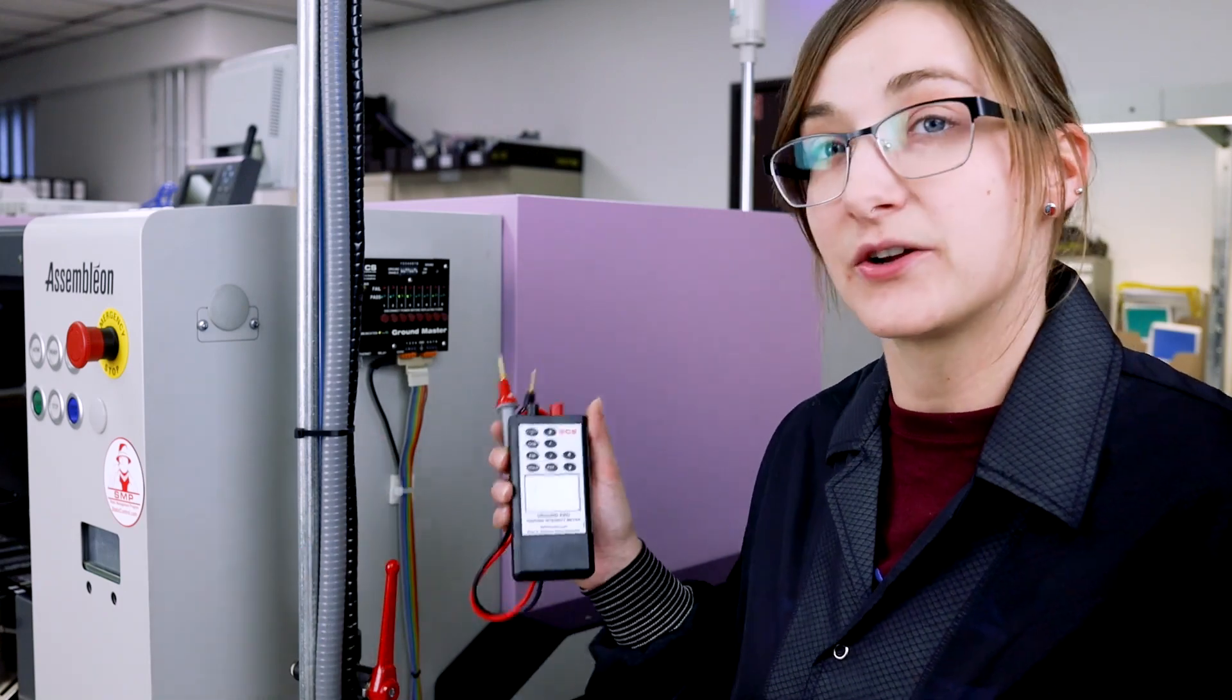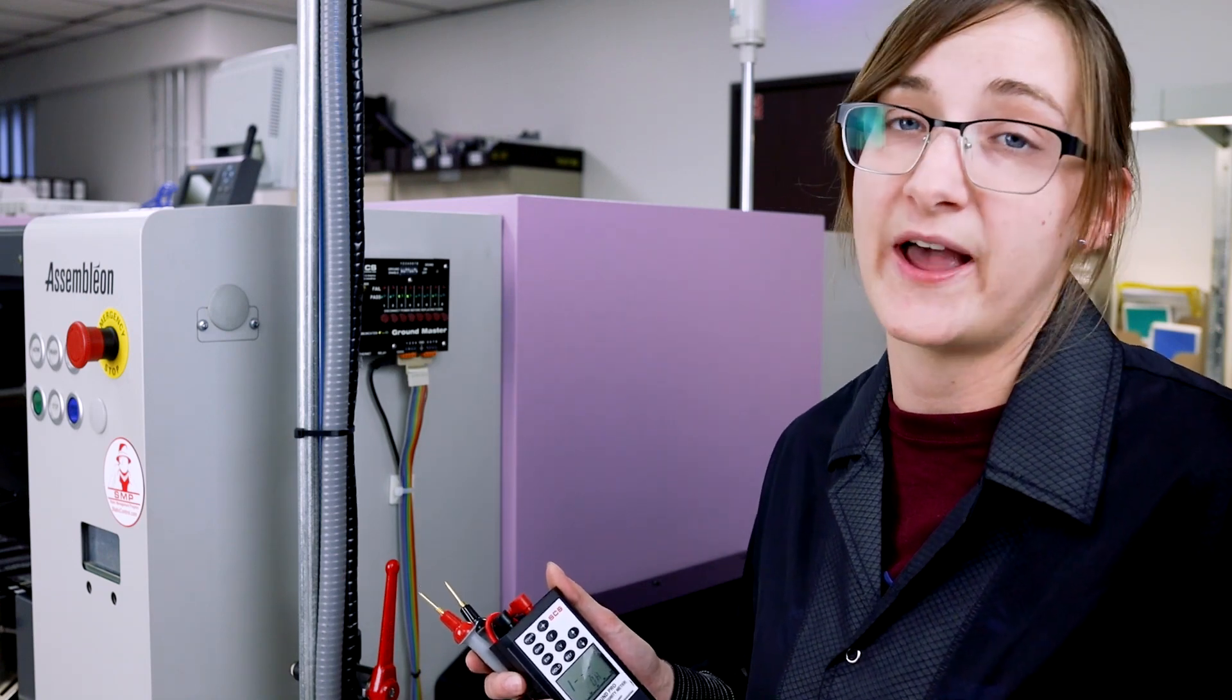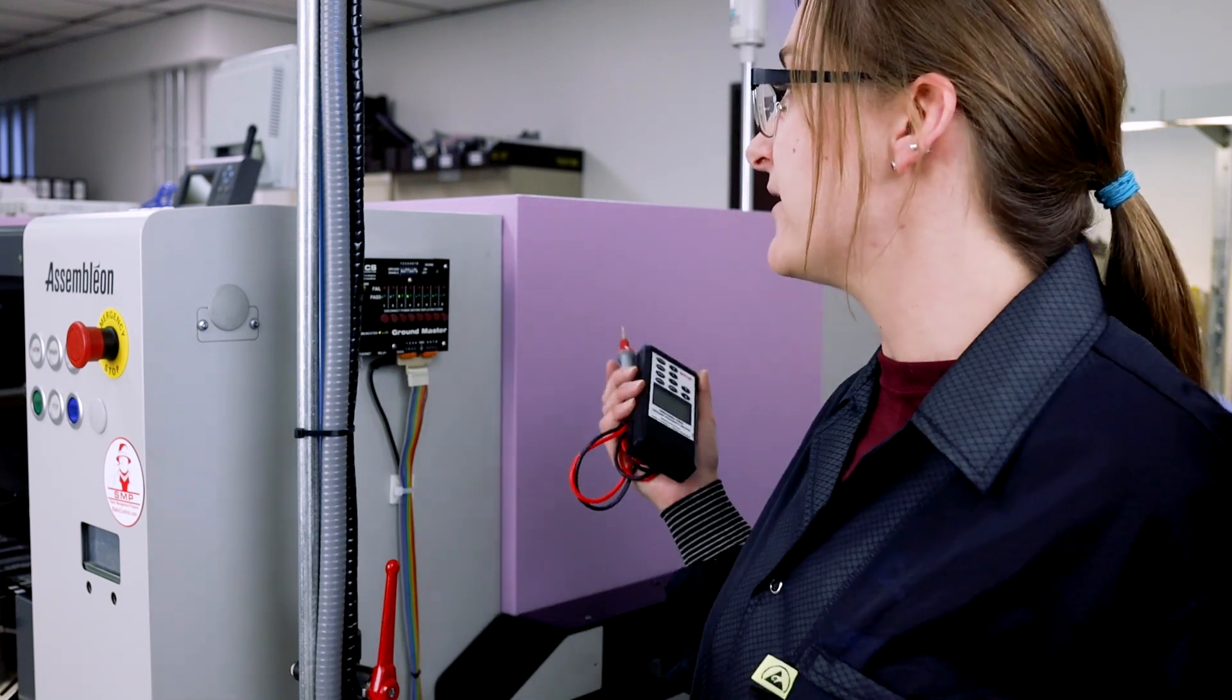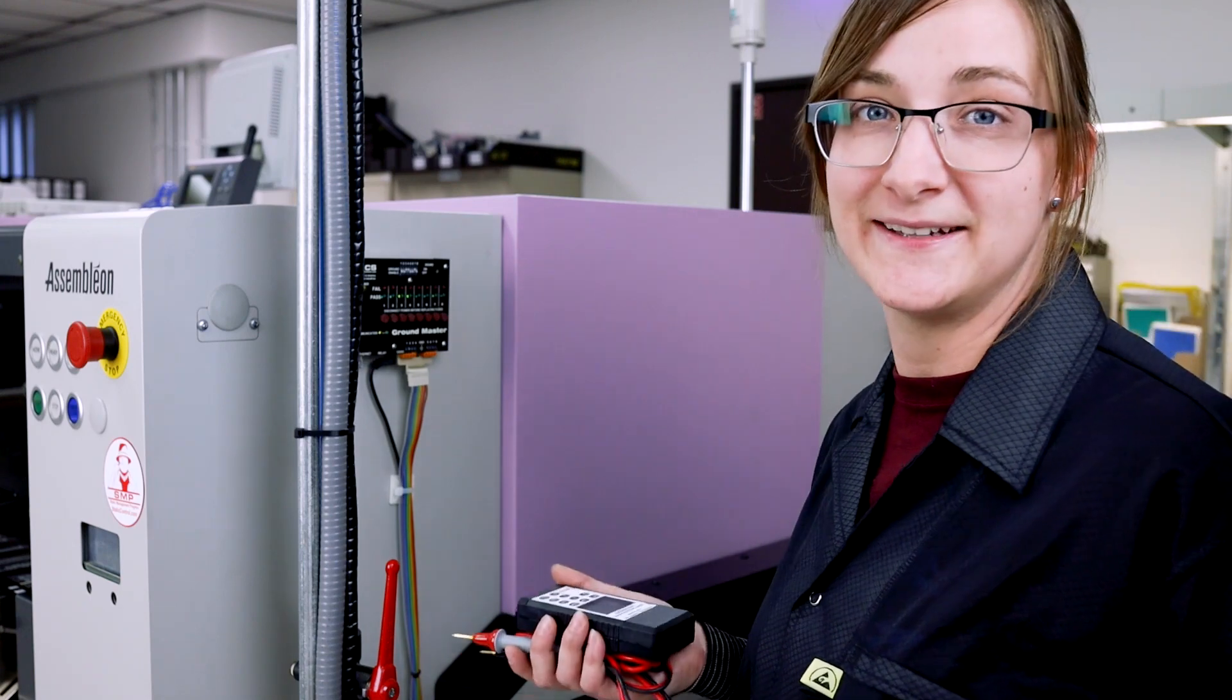You can use something like a ground pro to test points all over your machines to see where your ground points are good and where you don't have any at all. Therefore, you can add the points. Stay grounded.